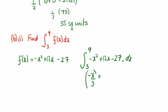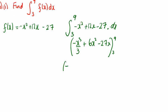So increase the power, divide by the new power. We're going to get minus x cubed over 3 plus 12x squared over 2, which we write as 6x squared, minus 27x, between 9 and 3. Putting in 9, we're going to get minus 9 times 9 times 9 divided by 3, which is 243 over 3, plus 6 times 81, which is 486.